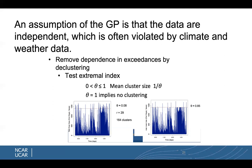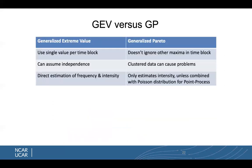To check for clustering, we can use an extremal index: if theta equals 1, there's no clustering; if it's less than 1, there's a mean cluster size of 1 divided by theta. To summarize the GEV versus the GP: the GEV uses a single value per time block and can assume independence, giving direct estimation of frequency and intensity. The generalized Pareto doesn't ignore other maxima in the time block, but clustered data can cause problems, and it only estimates intensity unless combined with the Poisson distribution for the point process.